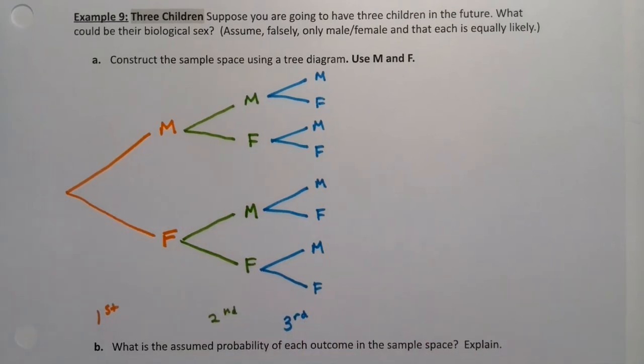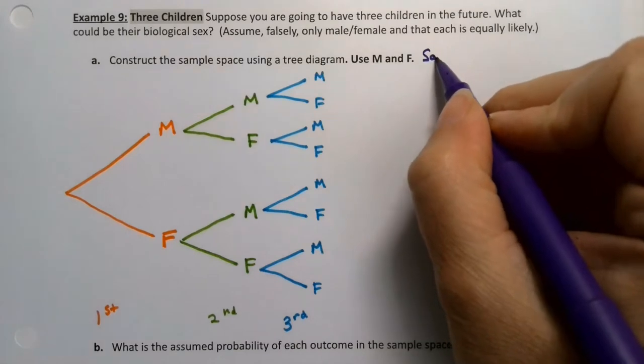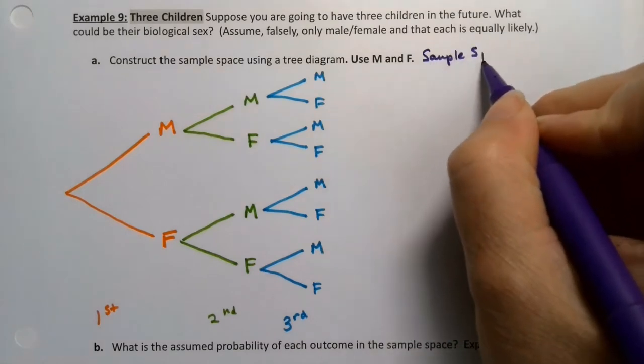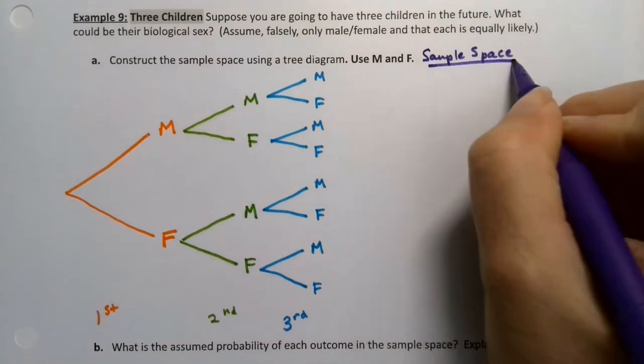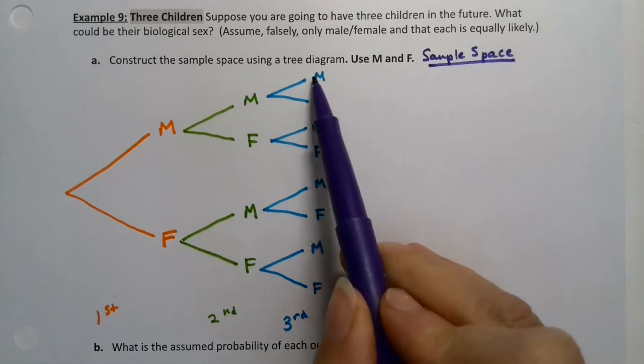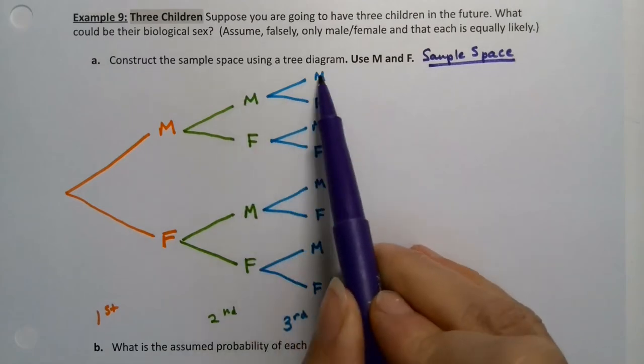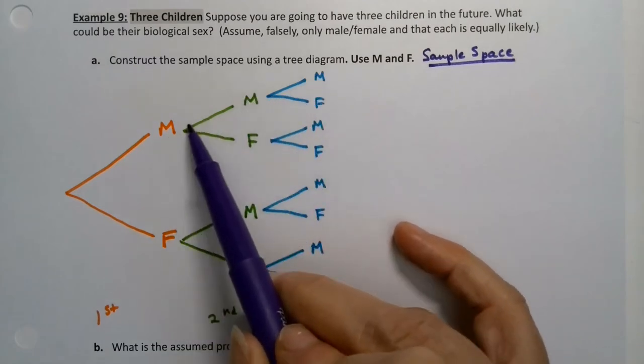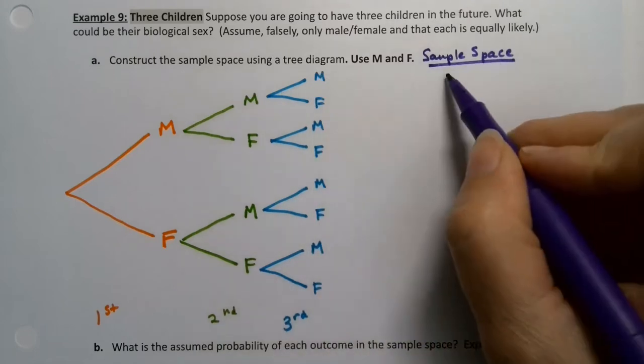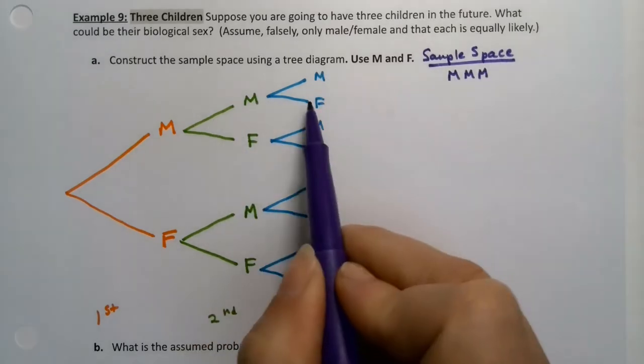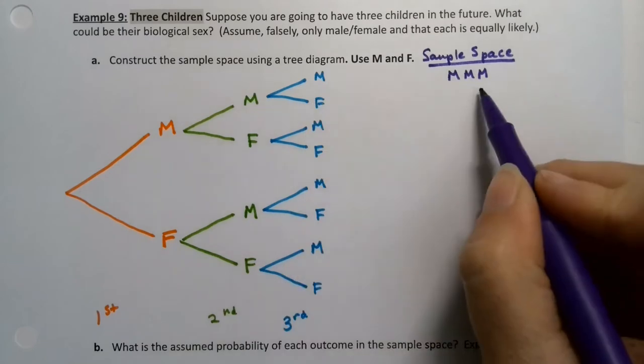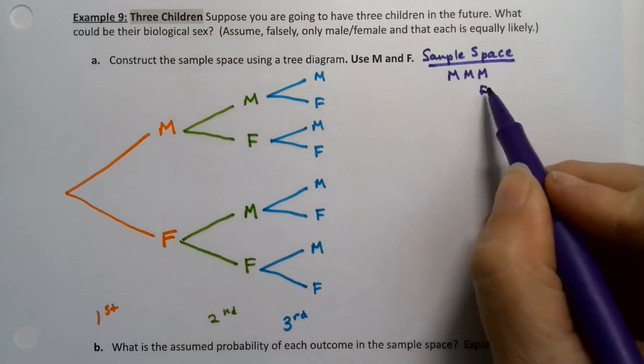Now all of this is not the sample space. The sample space I'm going to write over here. I'm going to go purple. Okay. So this M right here, how do we get there? M, M, M. That's the path to that. So that's MMM.